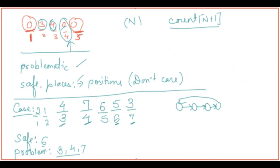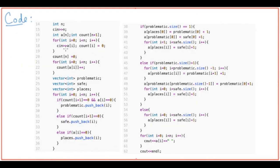Let's go to the code. First, I take the input array a of size n and maintain a count array. I take input a[i] and initialize count to all zeros, including count[n]. Then for i from zero to n, whatever a[i] is, I increment that count value — tracking who has already received a gift.